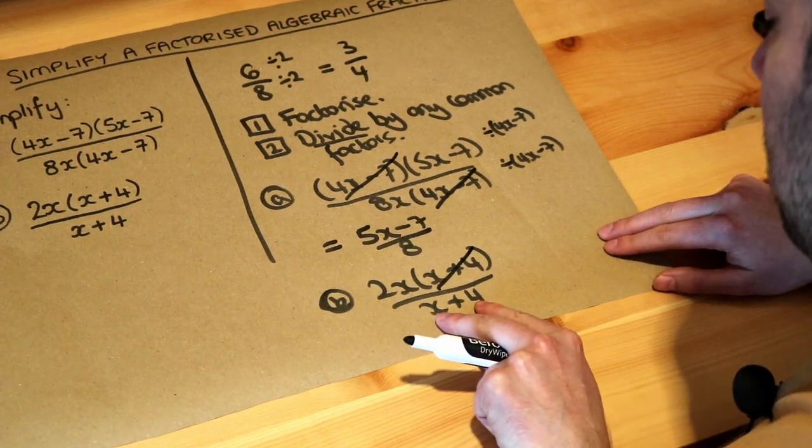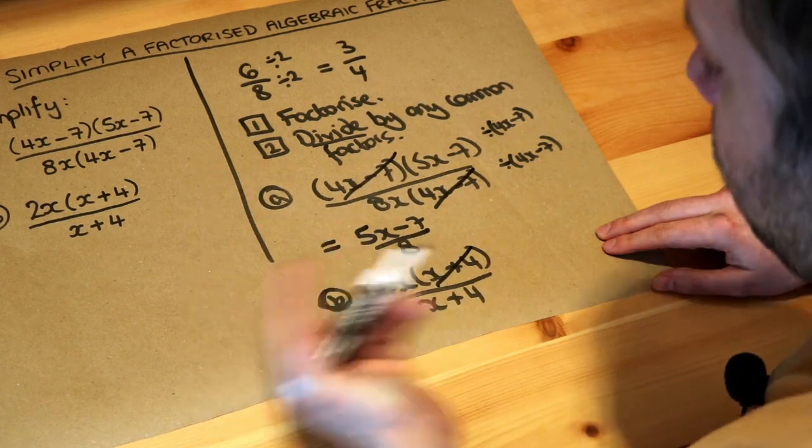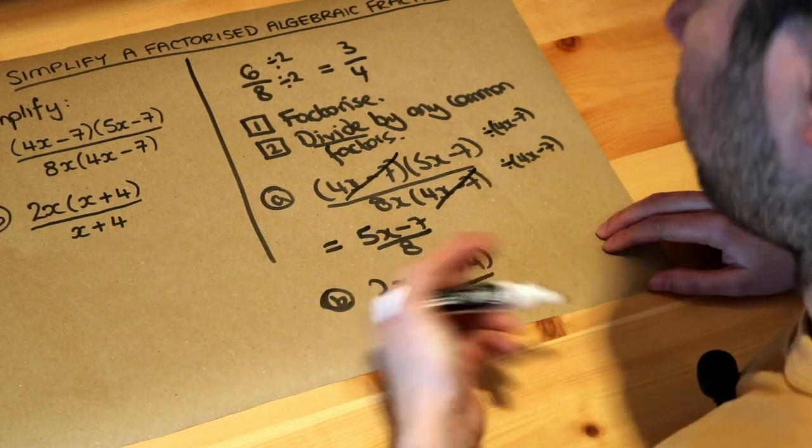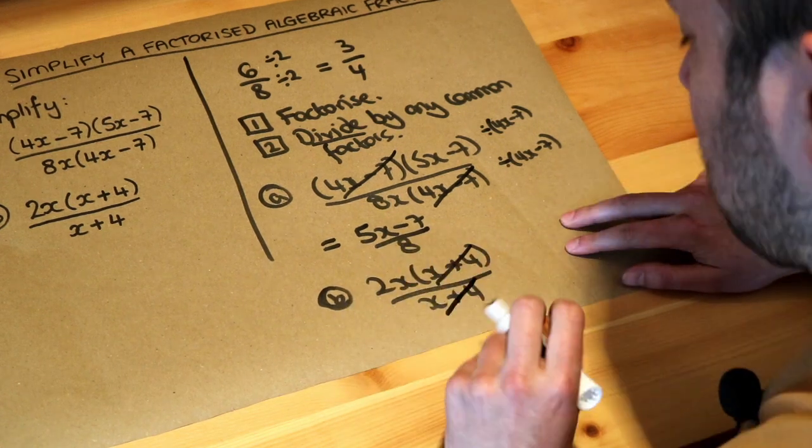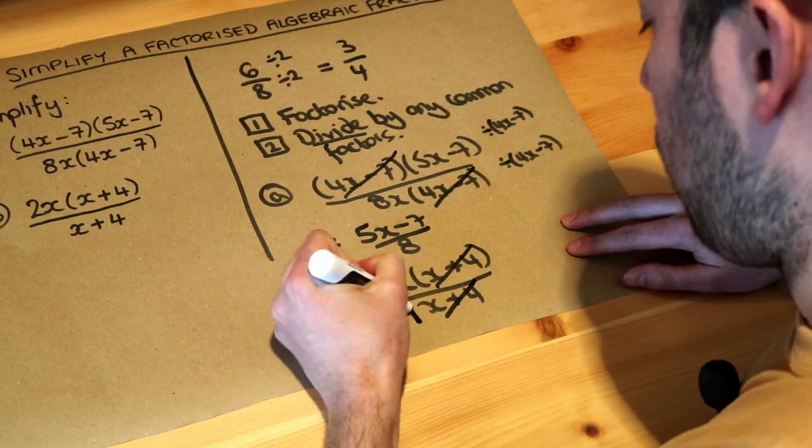When you divide the bottom by x + 4, well, if I asked you what's 10 divided by 10, it's 1. What's 5 divided by 5? It's 1. What's x + 4 divided by x + 4? It's 1. So when you cross it out, you don't get 0, you get 1 left.